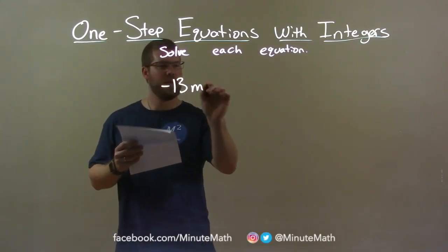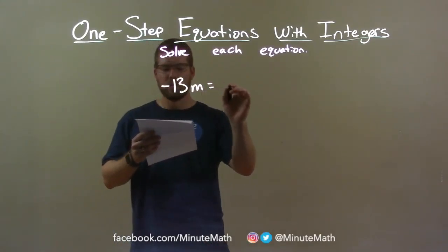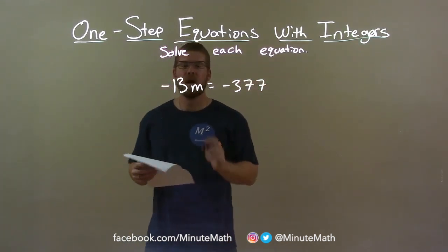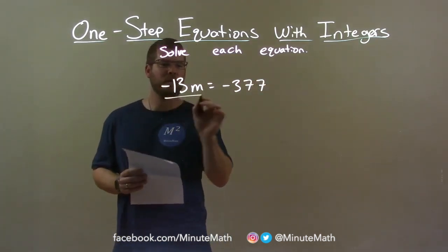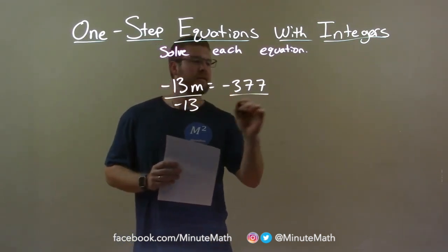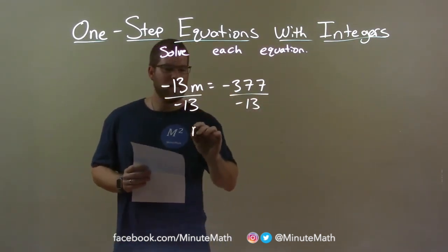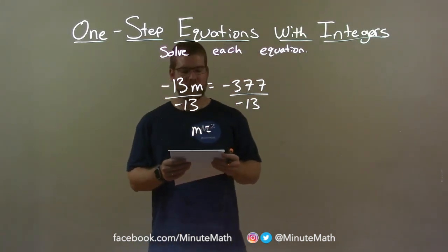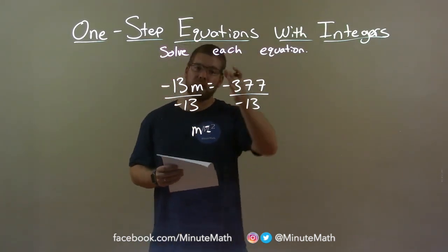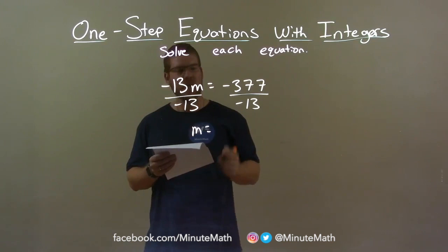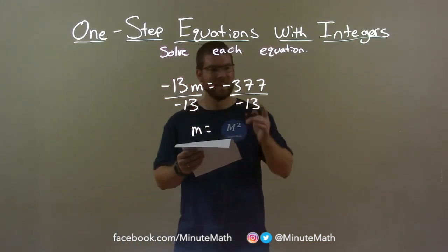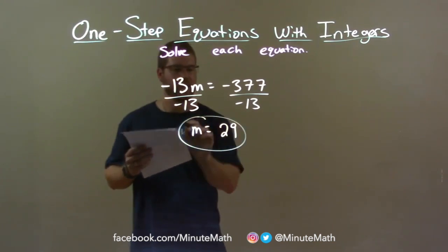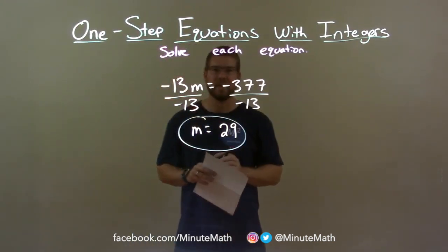Negative 13m equals negative 377. First thing here, I want to get m by itself. So I divide both sides by negative 13. This gives me m by itself. Now, what's negative 377 divided by negative 13? Negative divided by a negative is a positive. And 377 divided by 13 is 29. So my final answer here is m equals 29.